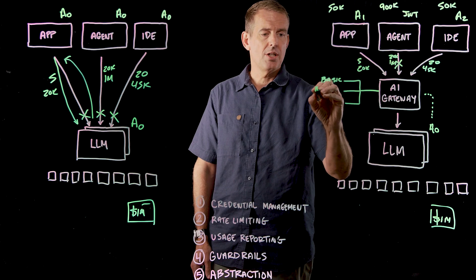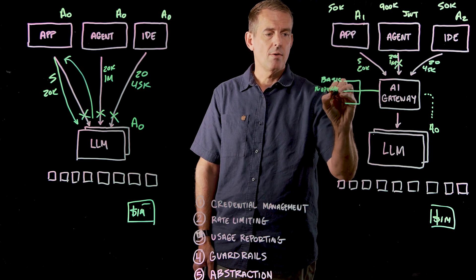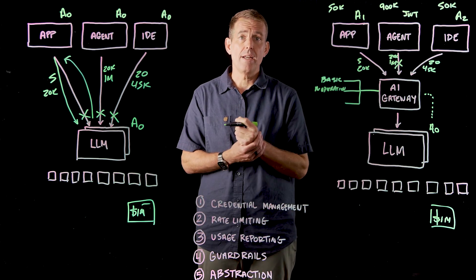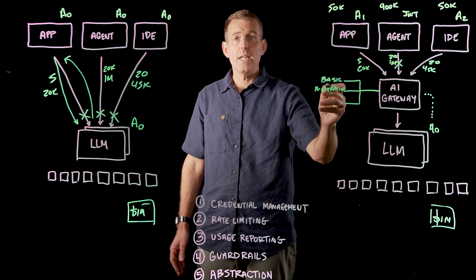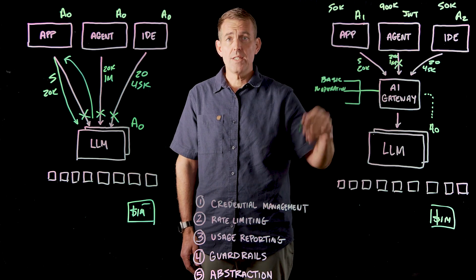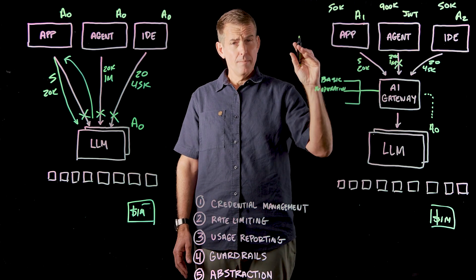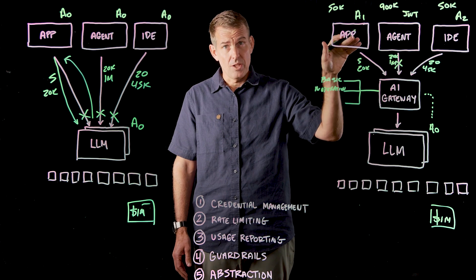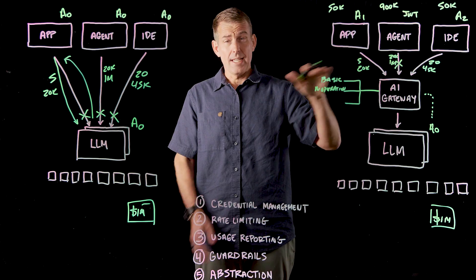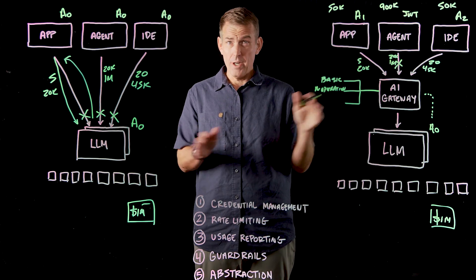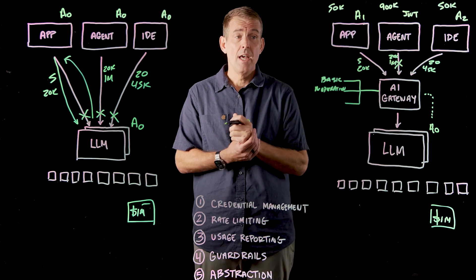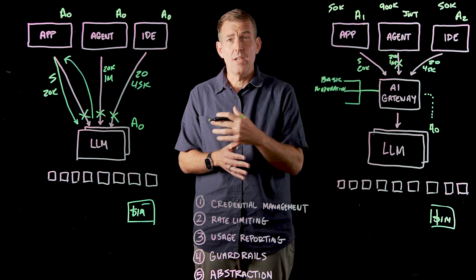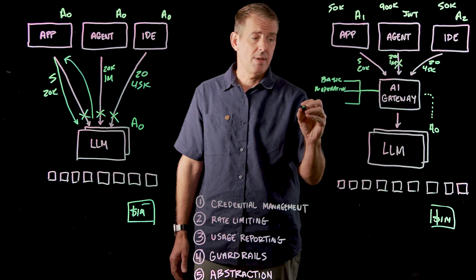The next feature is moderation endpoint integration. This is a key feature that upstream LLM providers all offer. But rather than waiting for the full request to go to the LLM and catching issues in the processing path, what you really want is to contact the moderation endpoint inside your network. If there's any problem with that request, it gets cut off in your network and doesn't go farther downstream. The key principle is to eliminate any threats or potential data exfiltration as soon as you can detect them.